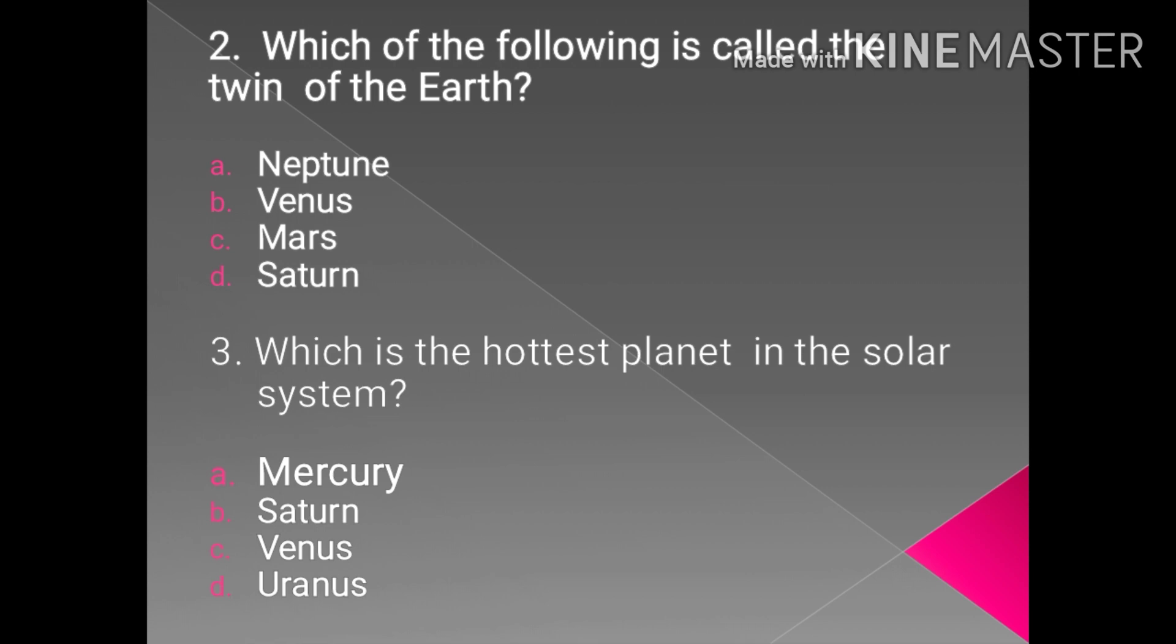The second question is, which of the following is called twin of Earth, or this can also be asked as which of the following is called the sister of Earth? Venus is known as the sister of Earth or twin of Earth. Why? Because they have almost same mass and same size, radius, volume, and even density is also approximately equal.